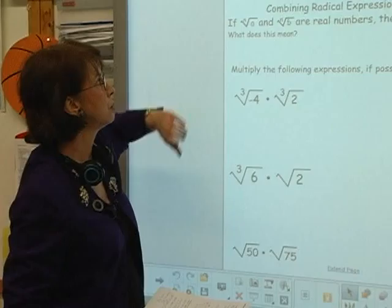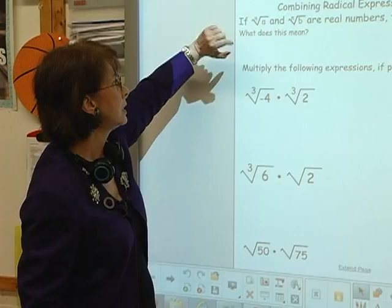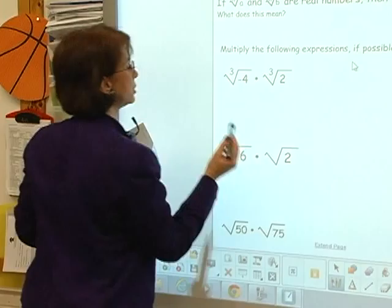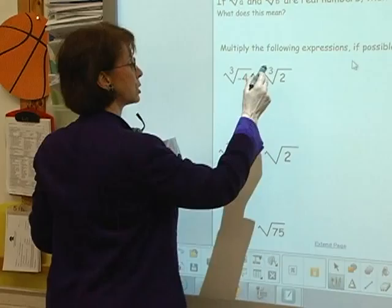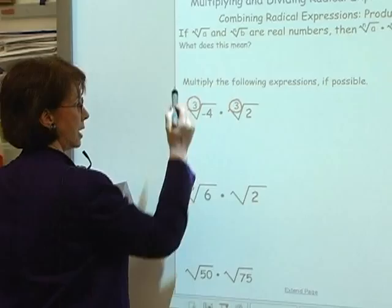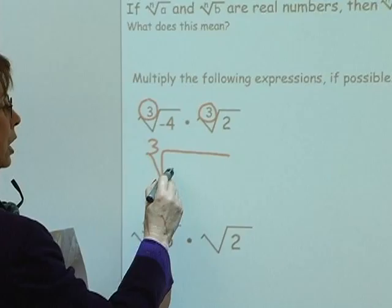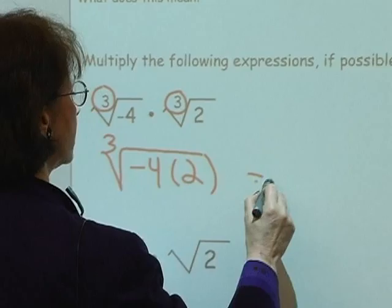Alright ladies and gentlemen, today we're talking about multiplying and dividing radical expressions. Remember, the index is n, and underneath the radical symbol we have the radicand. I'm looking at the cube root of negative 4 times the cube root of 2. The index is the same—it's 3—so I have the cube root of negative 4 times 2, which is the cube root of negative 8.